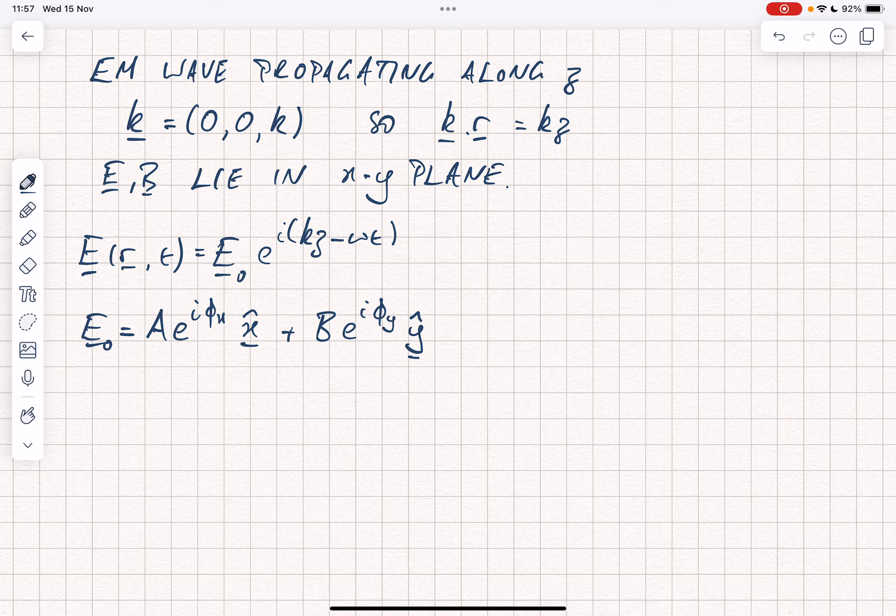That's a completely general wave. It allows us to have freedom as to what we're going to specify, but what really matters is the relationship between the phases. So what really matters is phi, which we would define as phi y minus phi x.